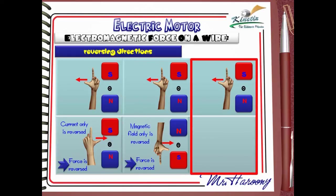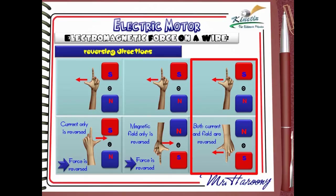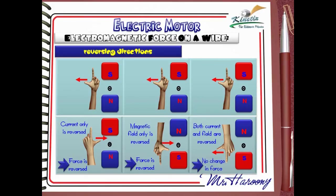In the third case, we reverse both the magnetic field and the current. Fleming's Left Hand Rule shows that the direction of pushing will be to the left — the same as the original case. So if both the current and the magnetic field are reversed, there is no change in the direction of the force.